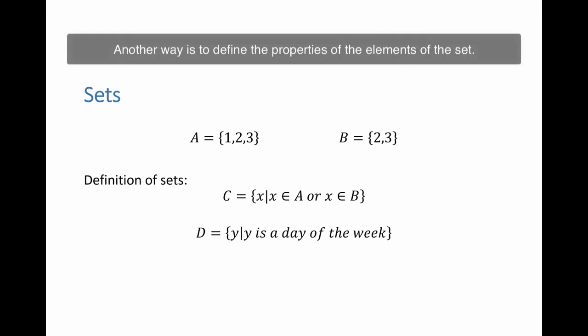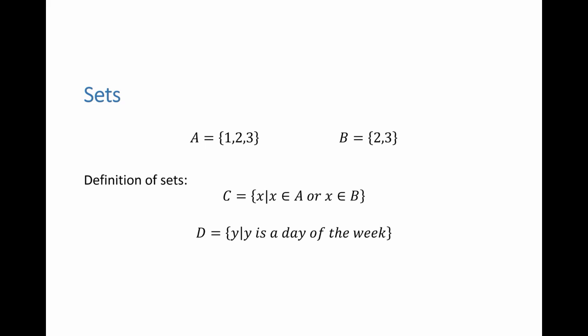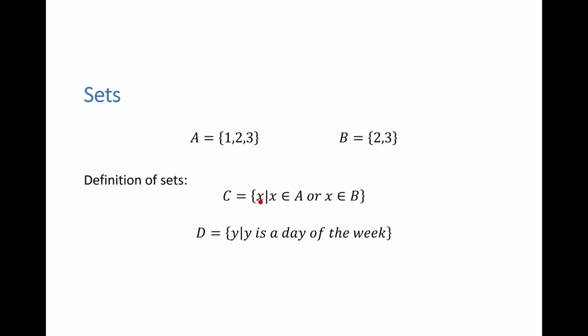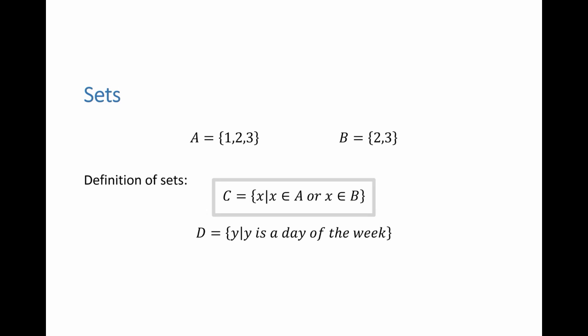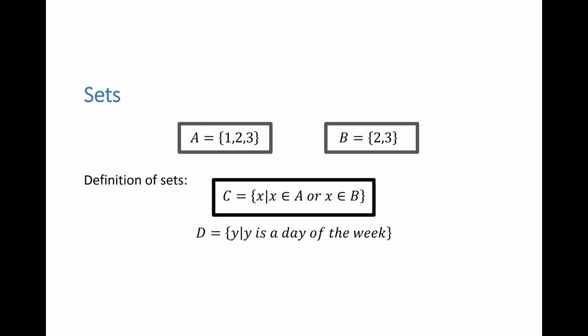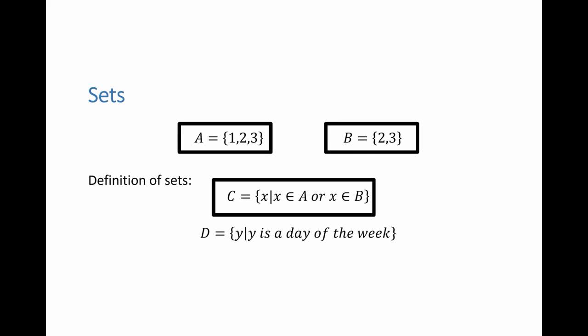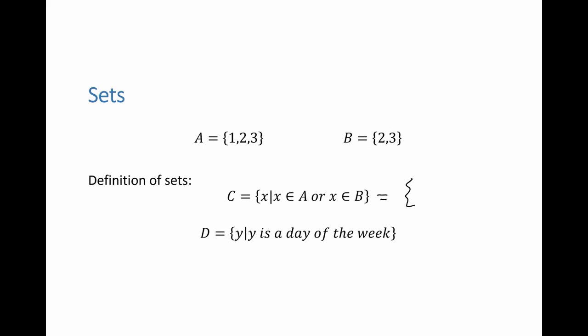Another convenient way of defining sets is by defining the properties of the elements of the set. For example, we can say that C is the set containing the elements x, and then we say something about the properties of x. In this particular example, x is an element of A or x is an element of B. Which means C is equal to all the elements that are in A or B — so we have 1, 2 and 3.